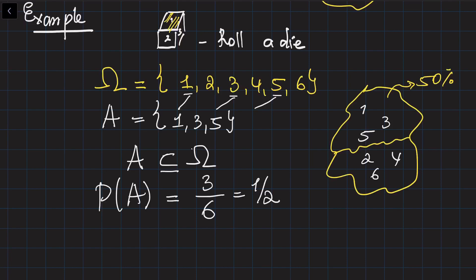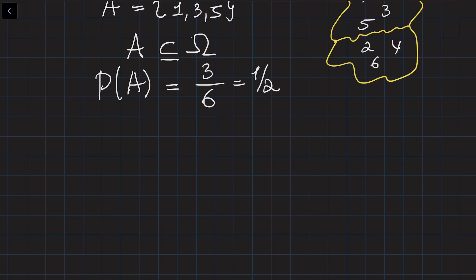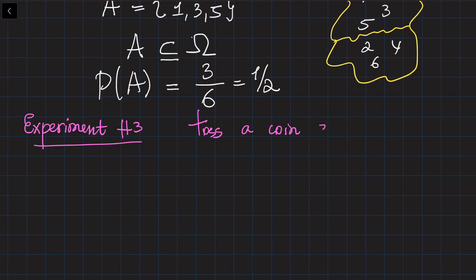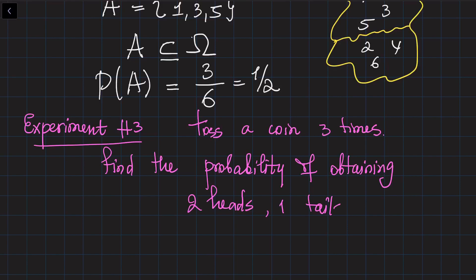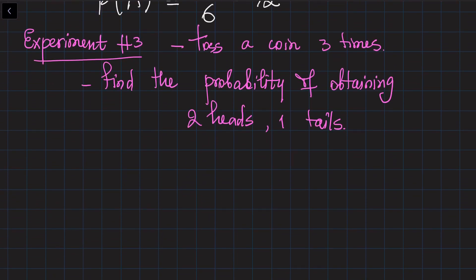So now the question is: why do we actually need combinatorial analysis in calculating probabilities? To answer this, let's make another experiment — experiment number 3. The experiment is: toss a coin 3 times, and find the probability of obtaining two heads and one tails. We will try to find this probability using the concept of sets: first build a sample space, then build an event, then calculate the probability.